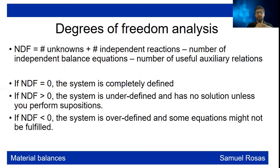If the number of degrees of freedom is zero, the system is completely defined and you can solve it. If it is larger than zero, the system is underdefined and has no unique solution unless you make some suppositions. If it is less than zero, the system is overdefined and some equations might not be fulfilled.